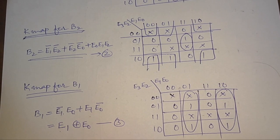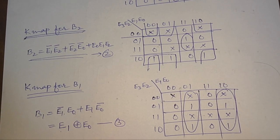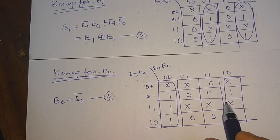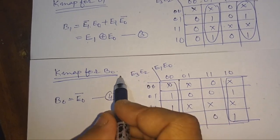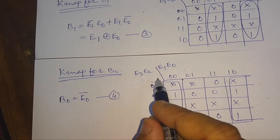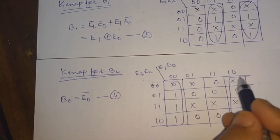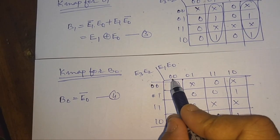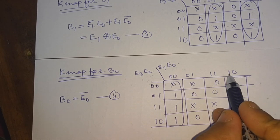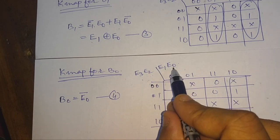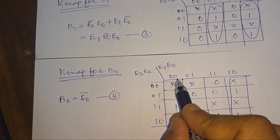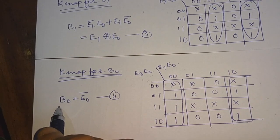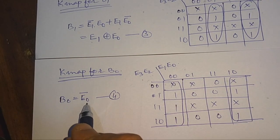Now we will find the Boolean expression for B0. This is the K-map for B0. From the combination, E1 is cancelled, and for E0 we have 0, 0 — that means E0-bar. Therefore, we get B0 = E0-bar.